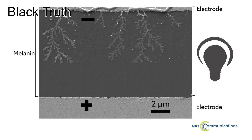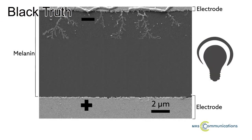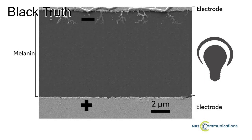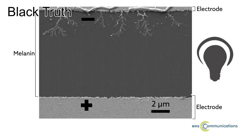Researchers have shown that melanin can act as a switch when sandwiched between metal electrodes, turning on and off under different applied voltages. It seems like a simple trick, but that switching behavior is critical to the operation of any computing device.